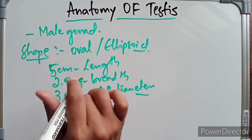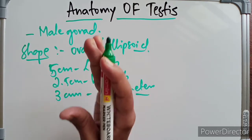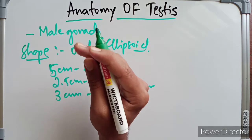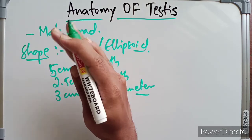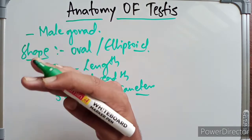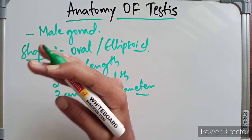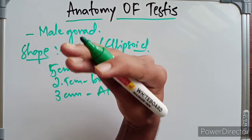Regarding the position in the scrotum, the testis is suspended by the spermatic cord. It lies obliquely so that its upper pole is slightly tilted forward and laterally, and the lower pole is tilted backward and medially.